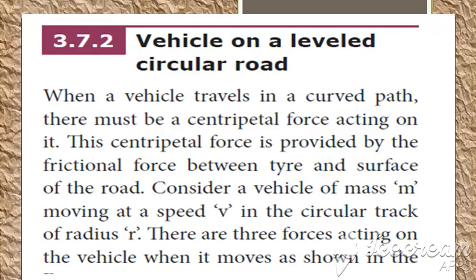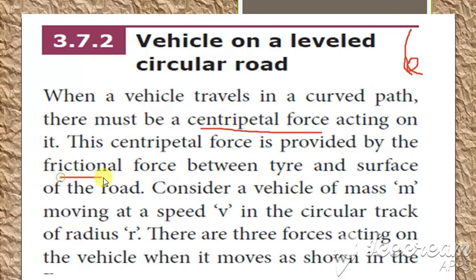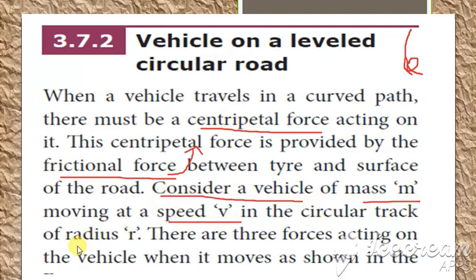Good morning students. The next topic we are going to see is the vehicle which is on a leveled circular road. So this we have seen already. Any vehicle which is moving on the leveled circular road has centripetal force. When it is moving in the circular path, between the tyre and the road there is a frictional force, and that frictional force gives the centripetal force. Consider a vehicle having mass m, moving at speed v and radius r.